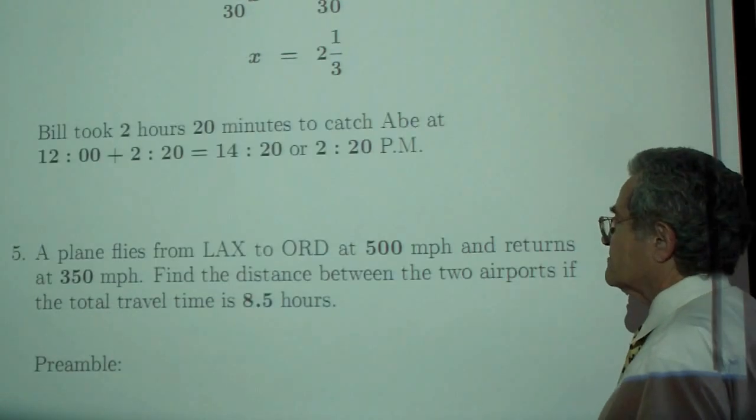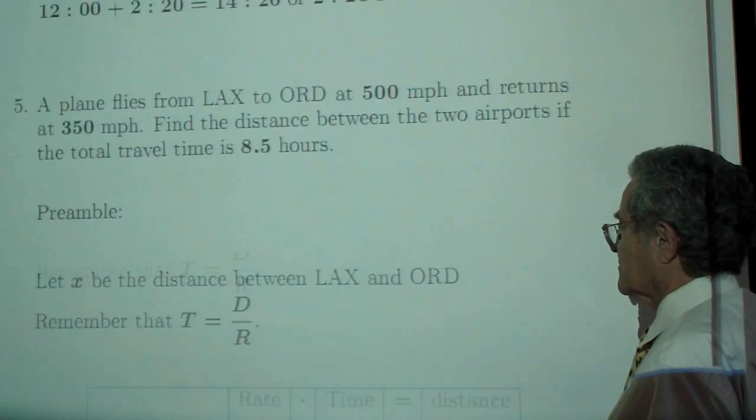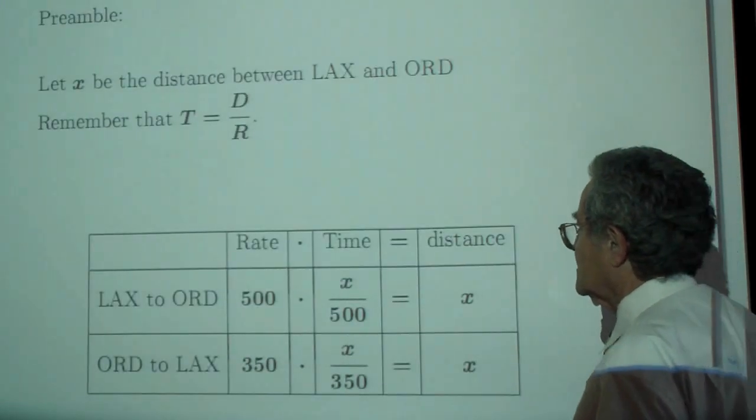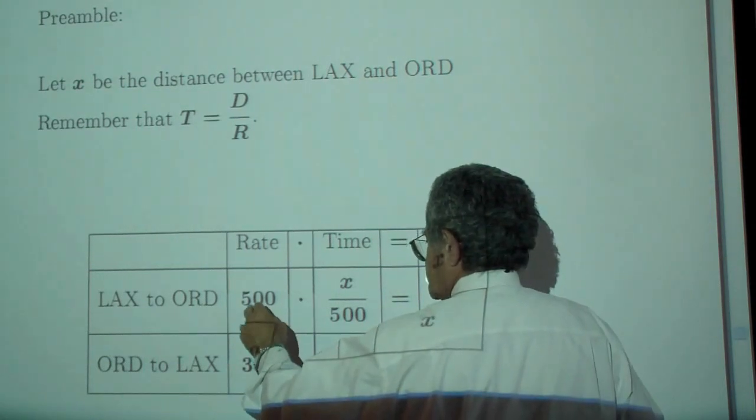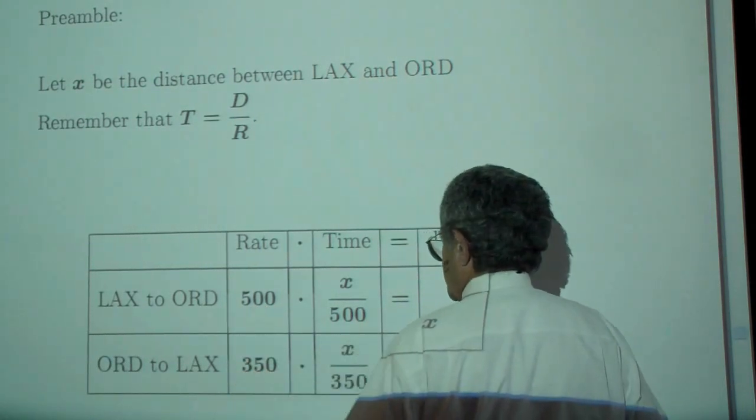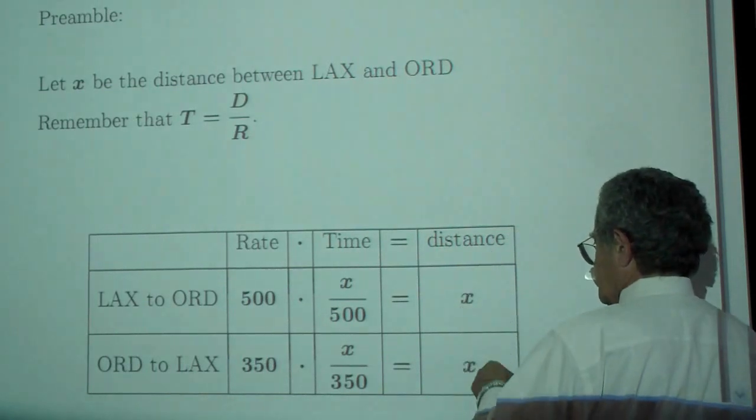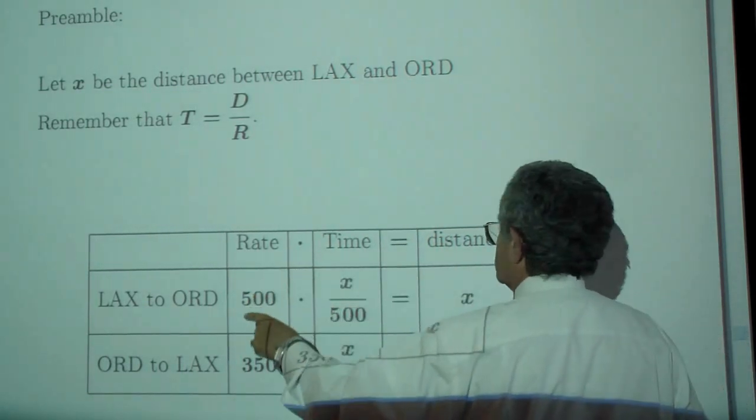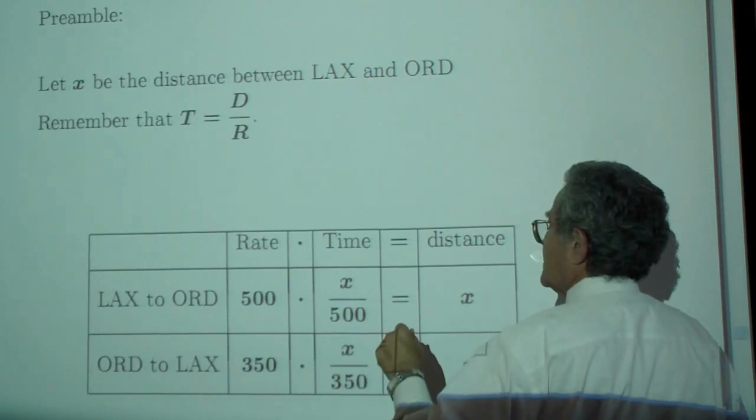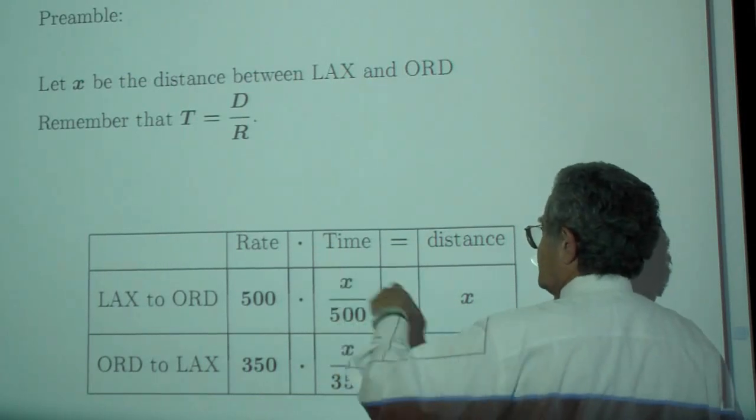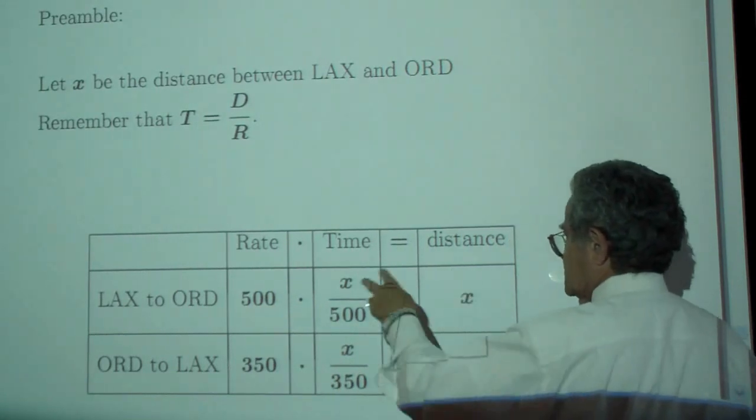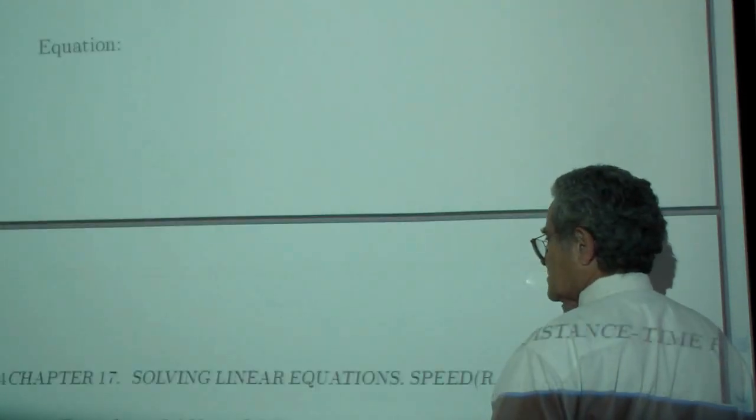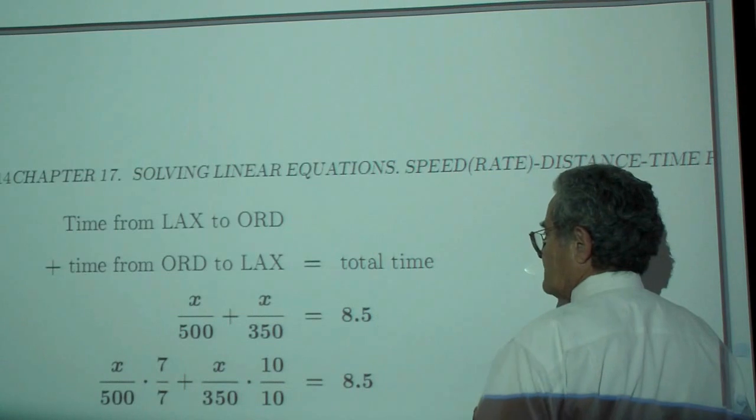And then the plane. The speed from LAX to ORD is 500 miles per hour, back 350 miles per hour. The distance is x, distance divided by rate, distance divided by rate is the time. The total time was 8.5 hours.